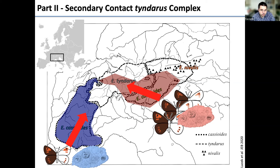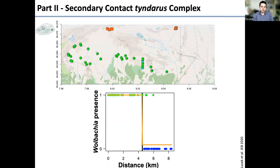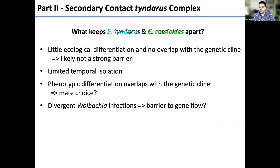Taking the prevalence of Wolbachia and fitting a cline, there's a perfect overlap with the genetic cline. The variation in Wolbachia infection could potentially be a barrier to gene flow. This pattern holds with both contact zones.